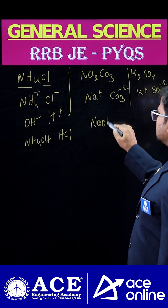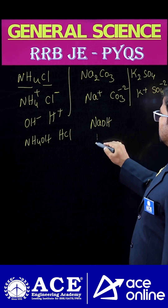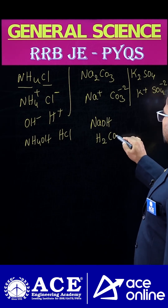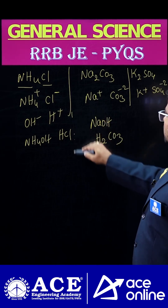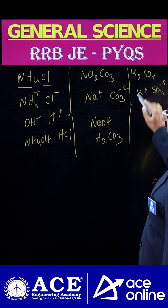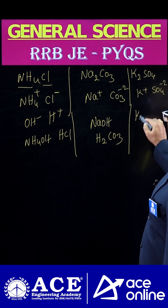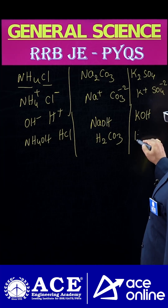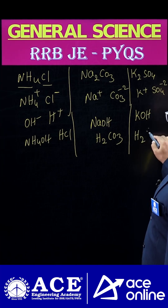For Na2CO3: the cation gives NaOH, and the anion CO3 2- gives H2CO3 (carbonic acid). For K2SO4: the cation gives KOH (potassium hydroxide), and the anion SO4 2- gives H2SO4 (sulfuric acid).